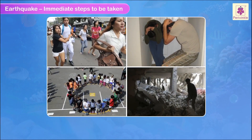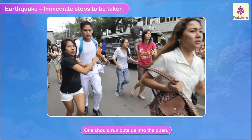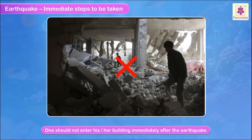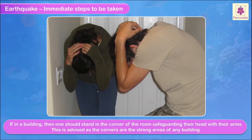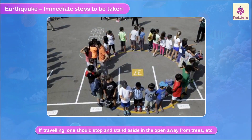Immediate steps to be taken when an earthquake occurs: One should run outside into the open. One should not enter their building immediately after the earthquake. If in a building, one should stand in the corner of the room, safeguarding their head with their arms — corners are the strong areas of any building. If traveling, one should stop and stand aside in the open, away from trees.